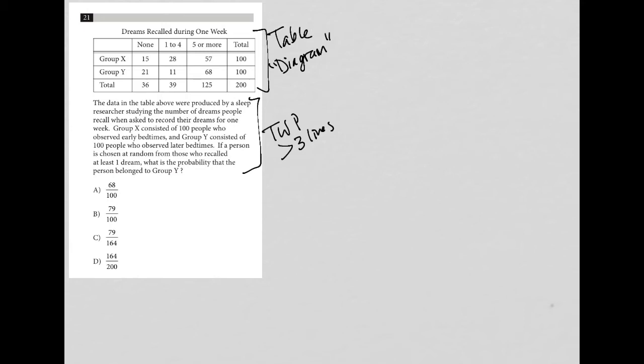The diagram shows that we have two groups, X and Y. We have dreams recalled during one week. We have a column of people who did not recall any dreams, people who recalled between one and four, people who recalled five or more, and then we have some totals in the columns as well as the rows here.